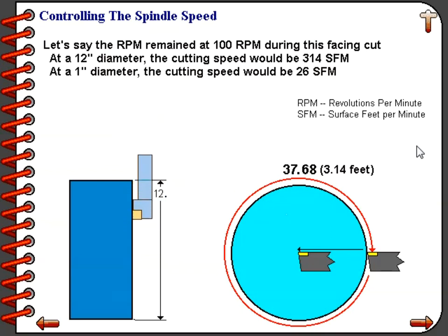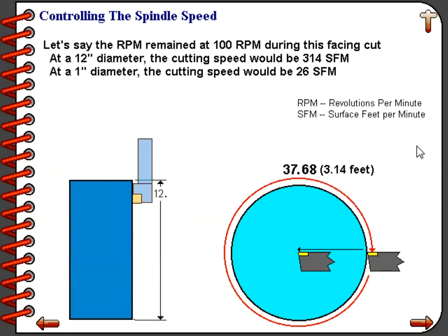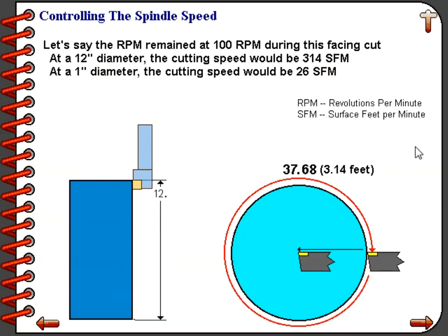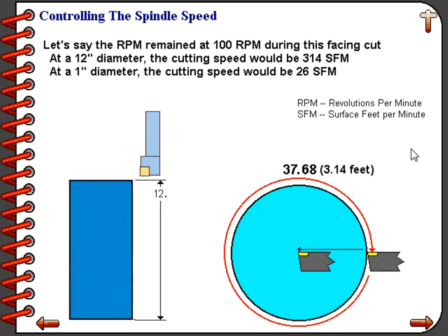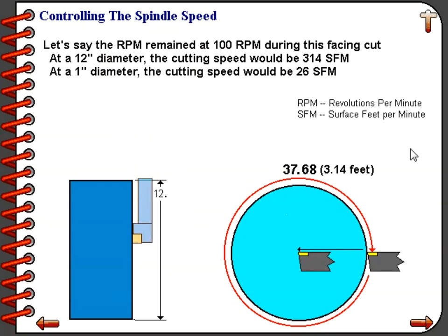The feature constant surface speed does this automatically for us. With this feature we would command G96 and tell the machine what surface feet per minute we want it to run at. The machine will then calculate an RPM for every diameter that the tool is cutting at. So under the effect of constant surface speed, the RPM of the machine is constantly changing whenever the X-axis changes diameter.